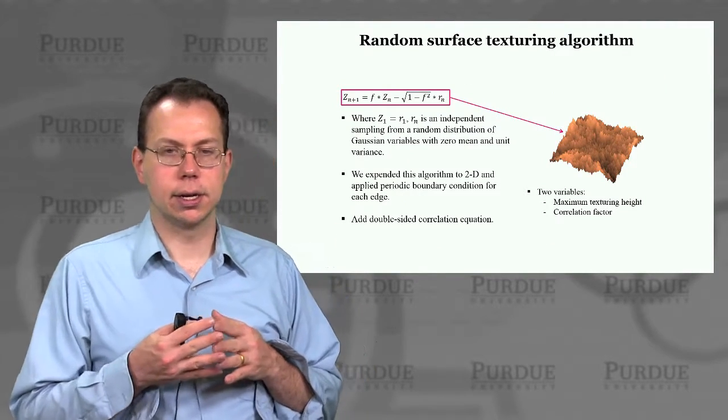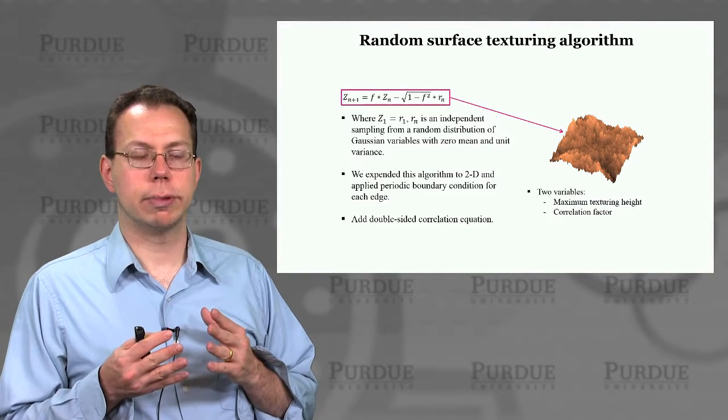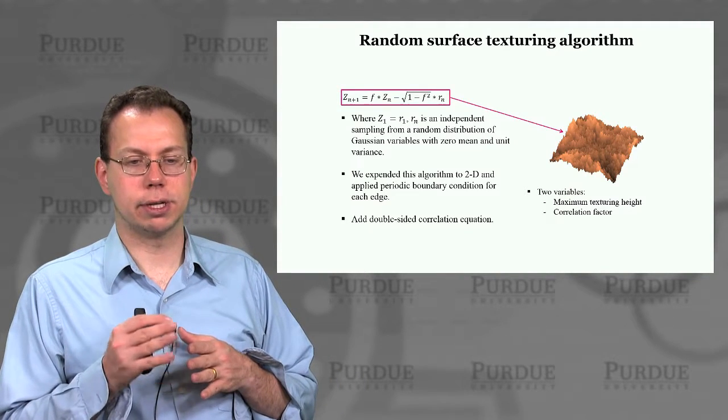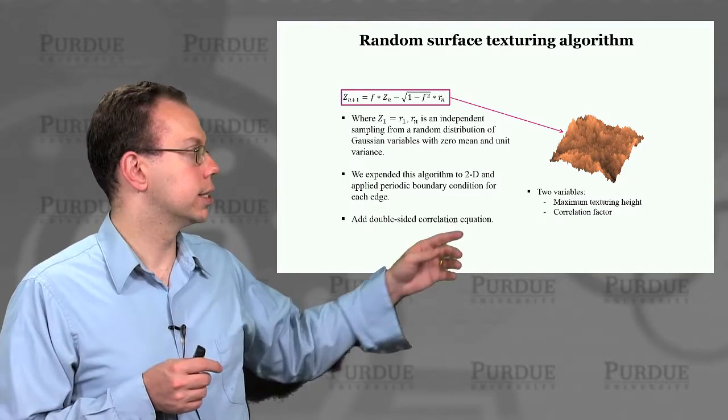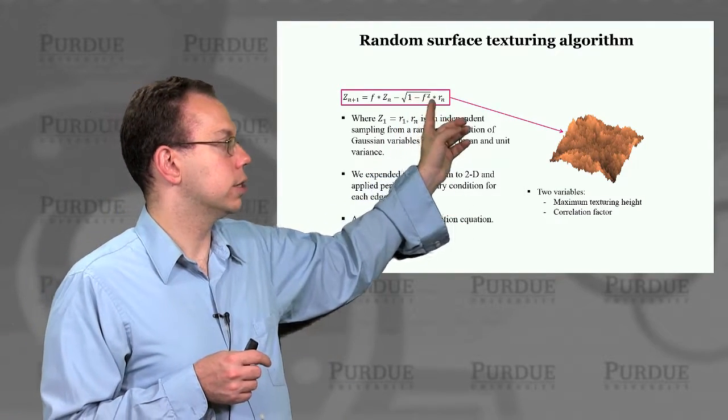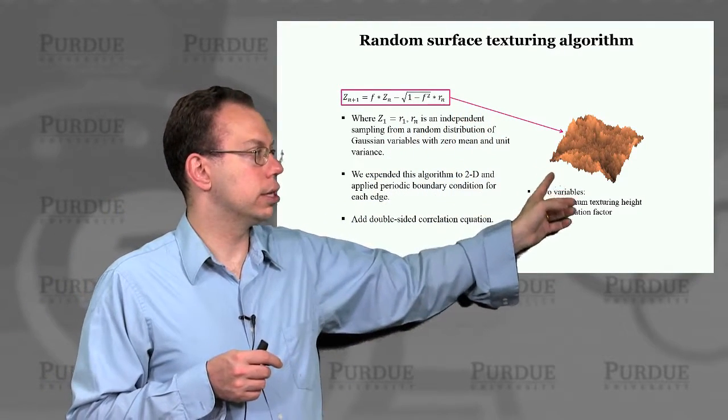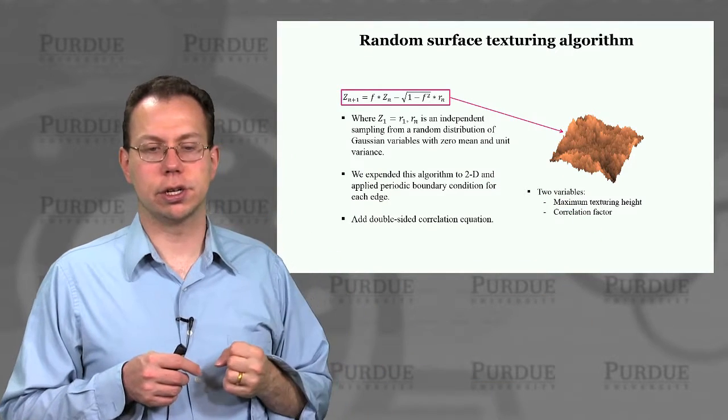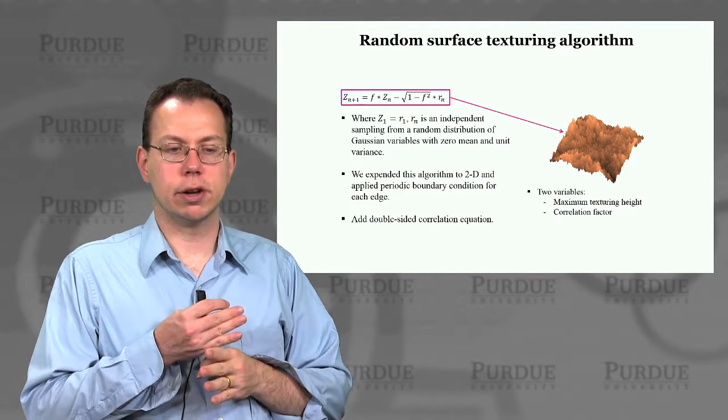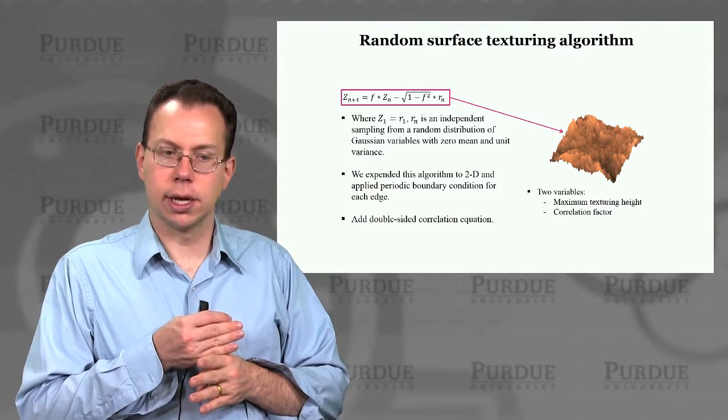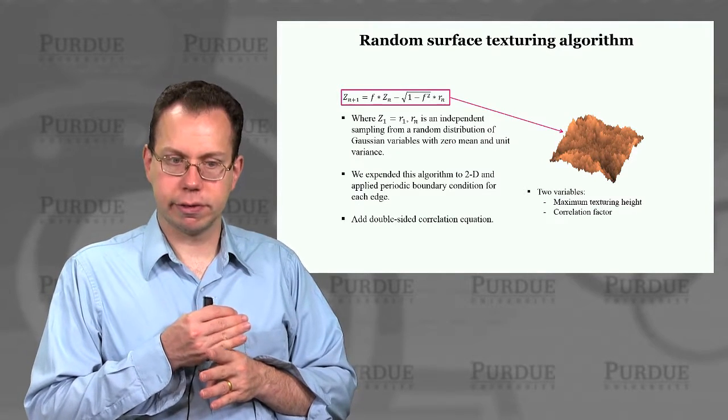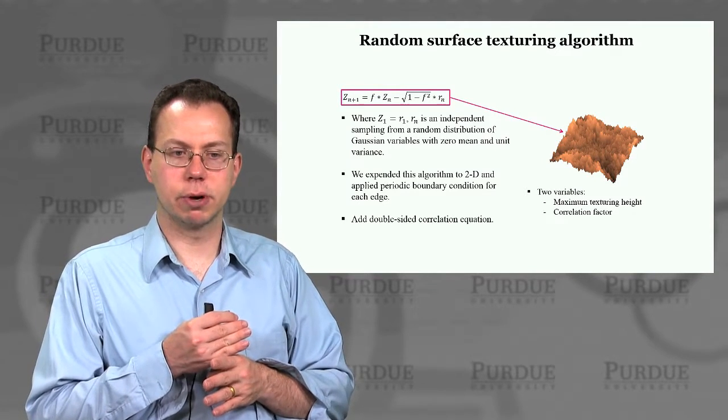In general, we can actually say that there's an analytical model for the surface geometry, which looks something like this. You basically assume that as you move along the surface of your textured absorber, there's some sort of autocorrelation between adjacent points, which is given by f, but then there's also a random component.